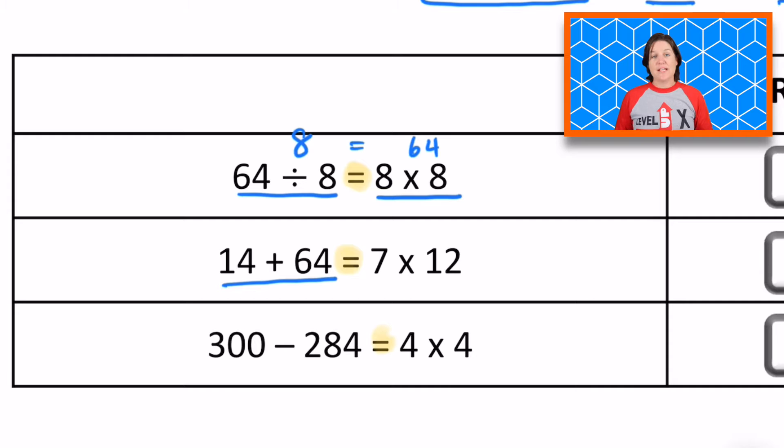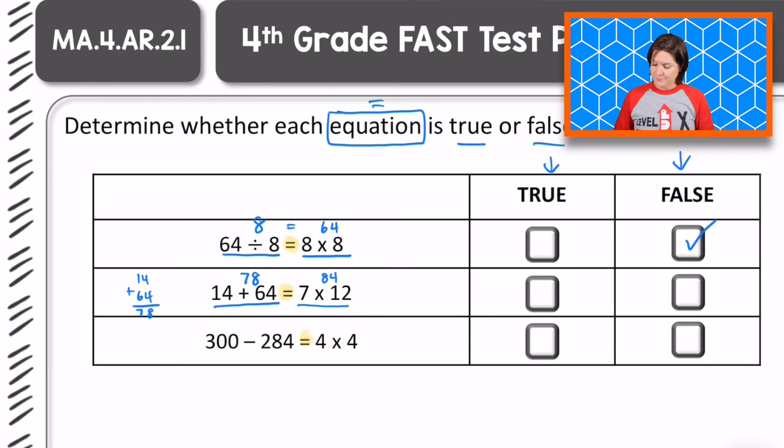So over here, we have the left side says 14 plus 64. And the right side says seven times 12. Let's go ahead and add up 14 and 64. And I like to show my work just to make sure. 4 and 4 is 8. 1 ten and 6 tens is 7 tens. So this side should equal 78. Left side. And the right side is 7 times 12, which is one of our multiplication facts. So what is 7 times 12? 84. Is 78 on the left side equal to 84? No. So which one do we need to mark? False. Very good. So same column, mark the false.